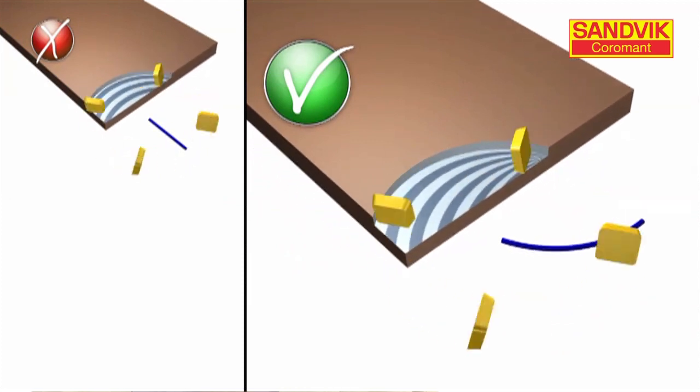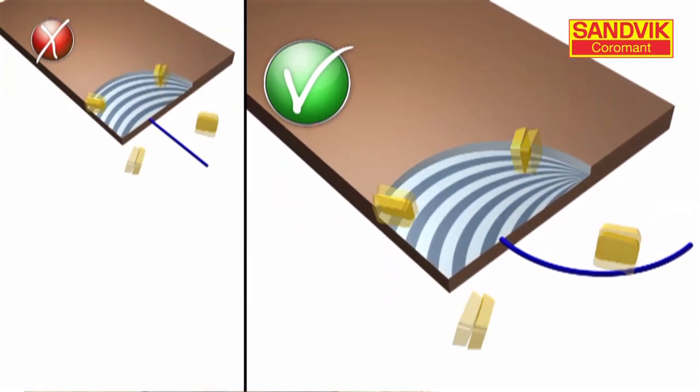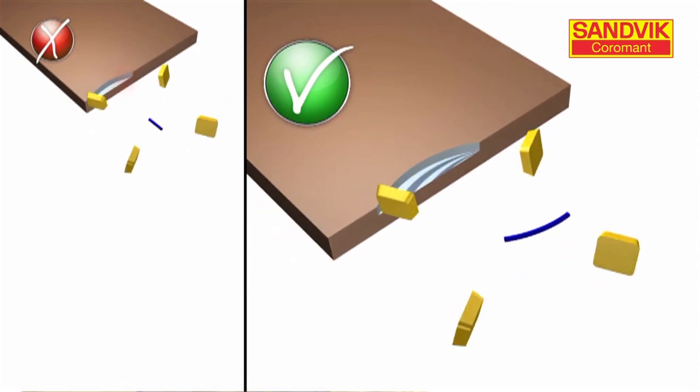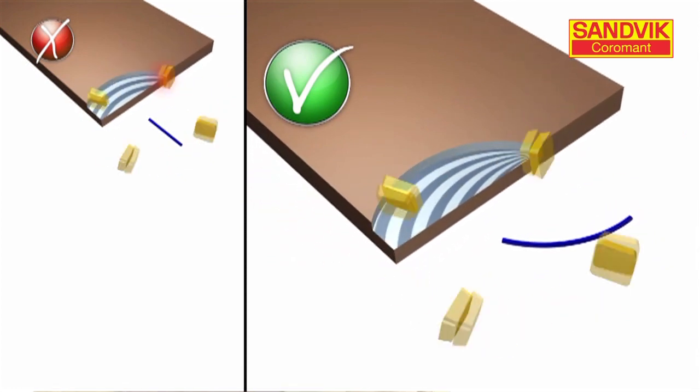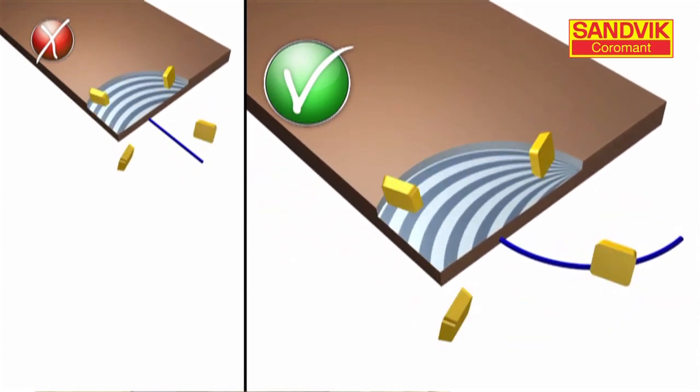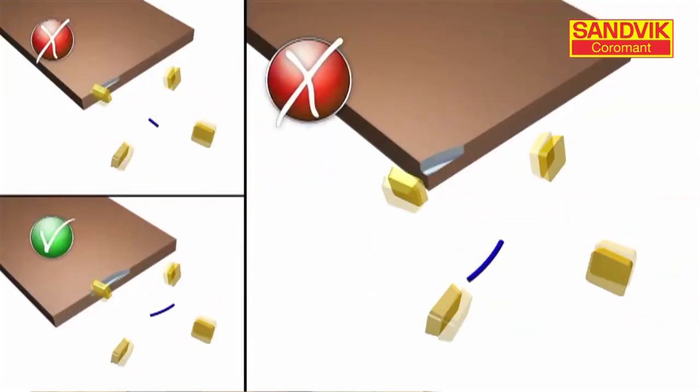With the roll-in technique, we focus on easing the inserts into cut, ensuring that we obtain a thick chip on entry and a thin chip on exit. As illustrated in this animation, we just need to ensure that we're rolling in the right direction: clockwise.